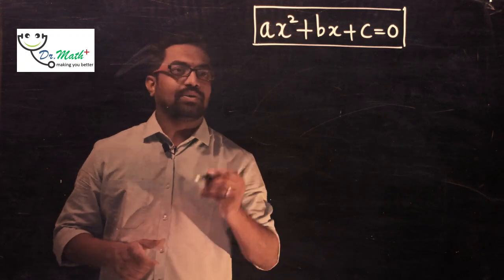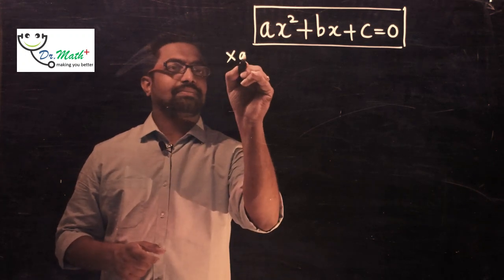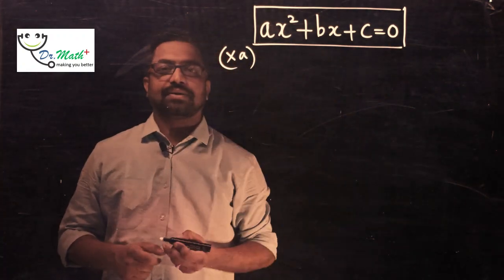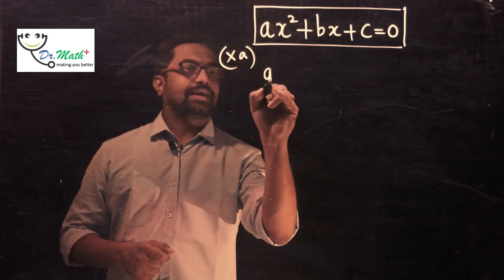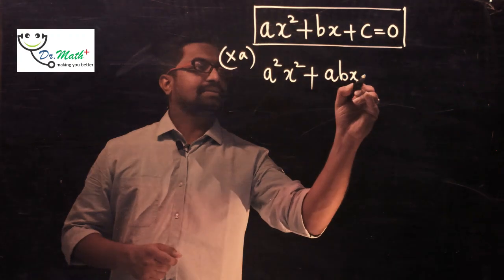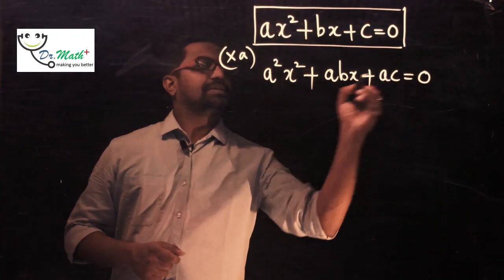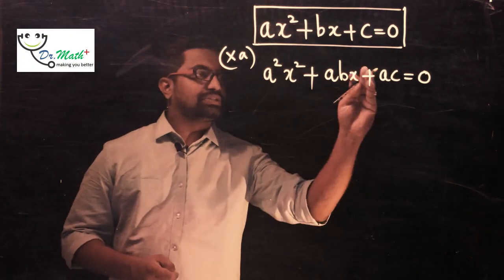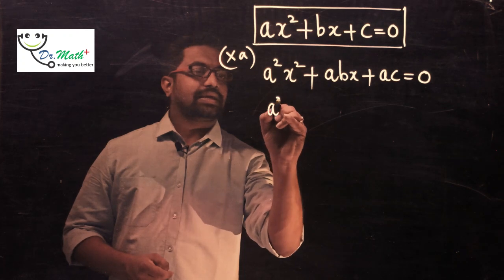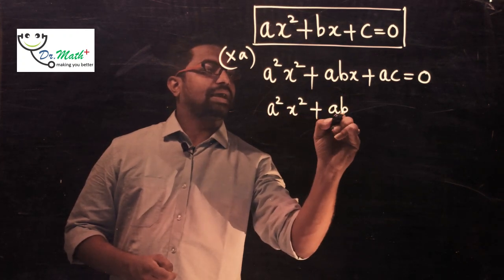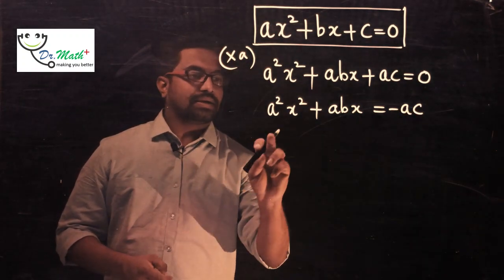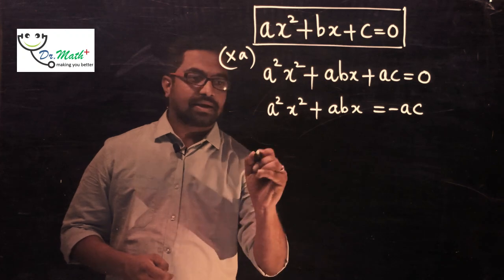Now, ax² may not be a perfect square. To make it a perfect square, I'll multiply the entire equation by a throughout. Multiplying by a gives: a²x² + abx + ac = 0. Next, I shift ac to the right-hand side, giving a²x² + abx = −ac.